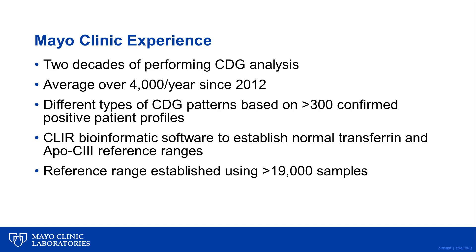With more than two decades of experience in clinical biochemical testing for CDG, our laboratory has experience unequaled in the industry. The complexities and variations of the transferrin and APOC3 isoforms require skill and expertise to interpret accurately. With more than 150 described types of CDG and new types continually being discovered, even small differences in the glycan profile can be indicative of a different type of CDG. We currently have over 300 confirmed positive patient profiles for reference, and our bioinformatic software has been utilized to establish normal transferrin and APOC3 reference ranges.